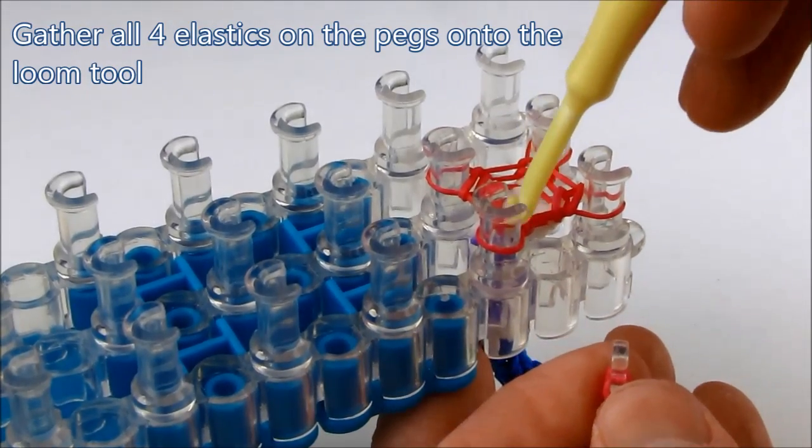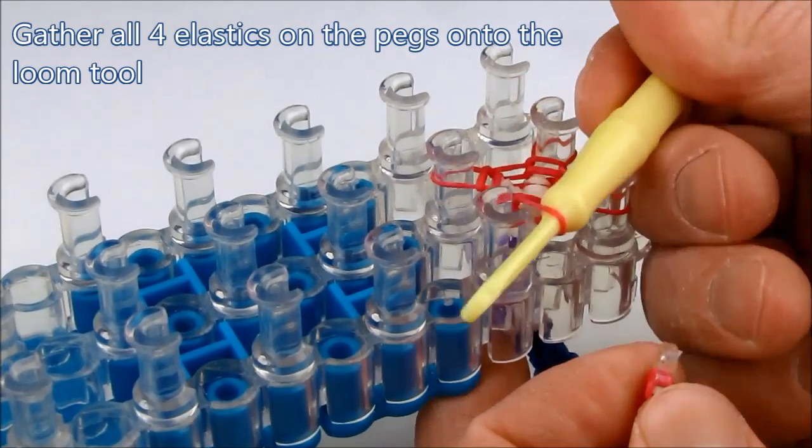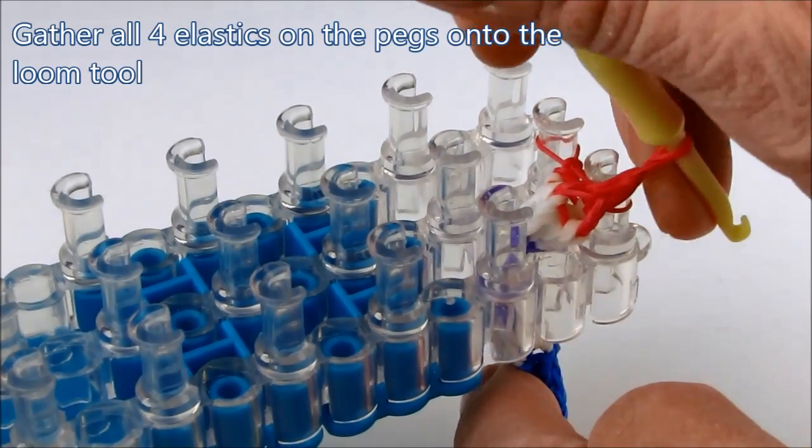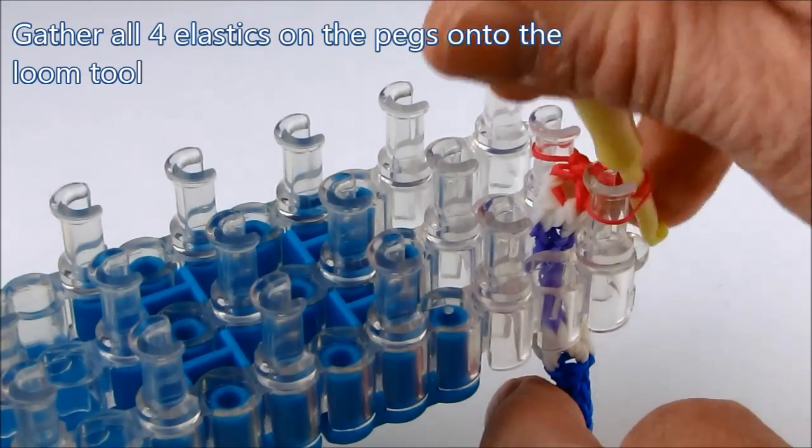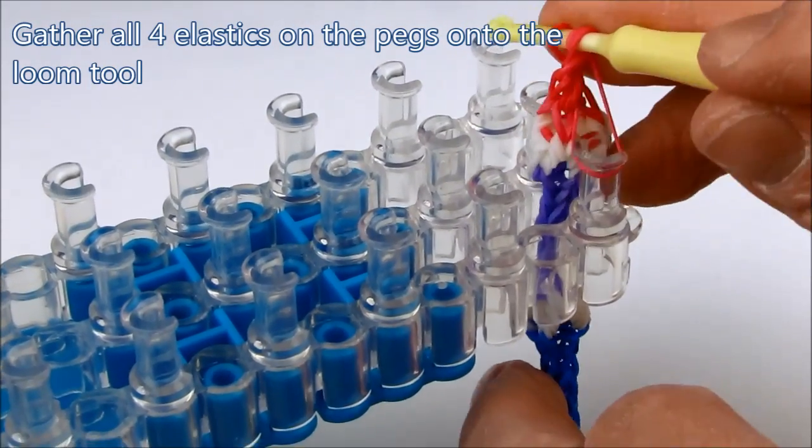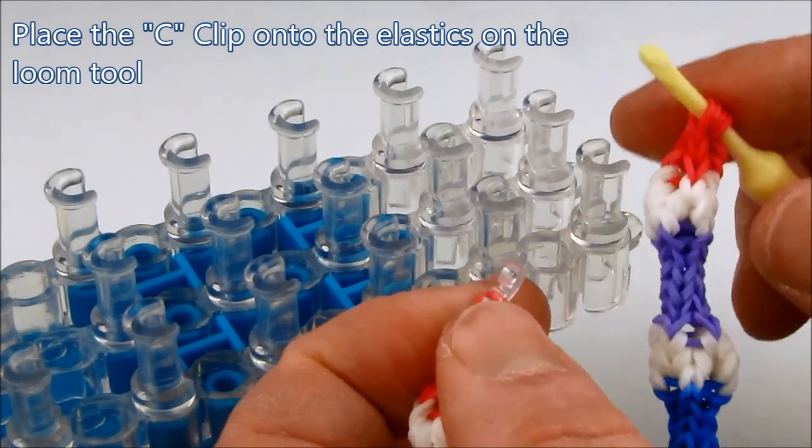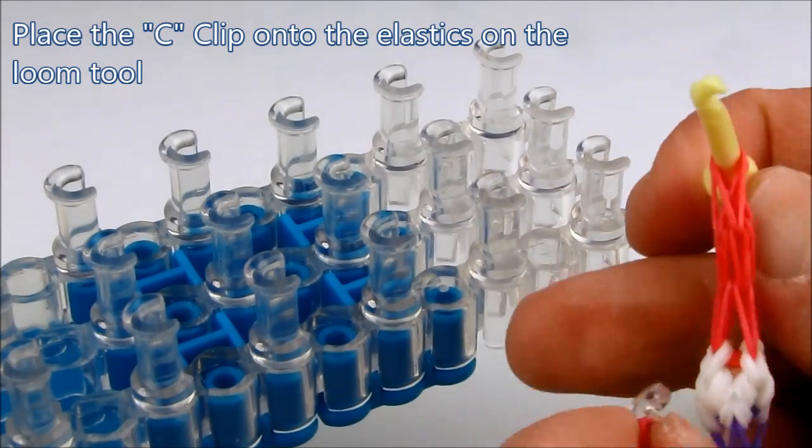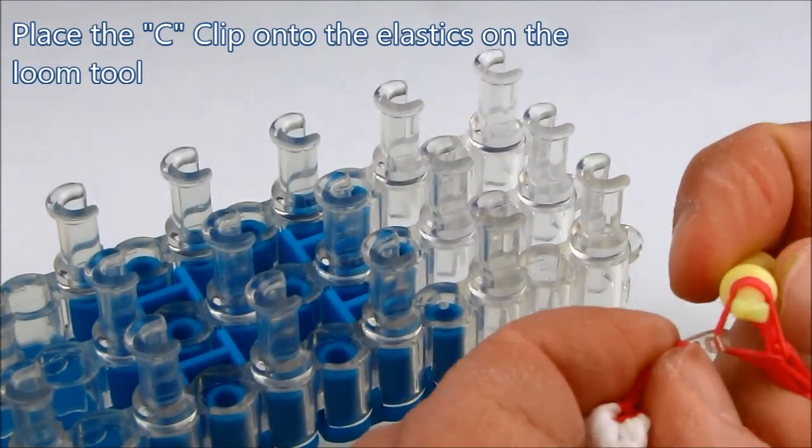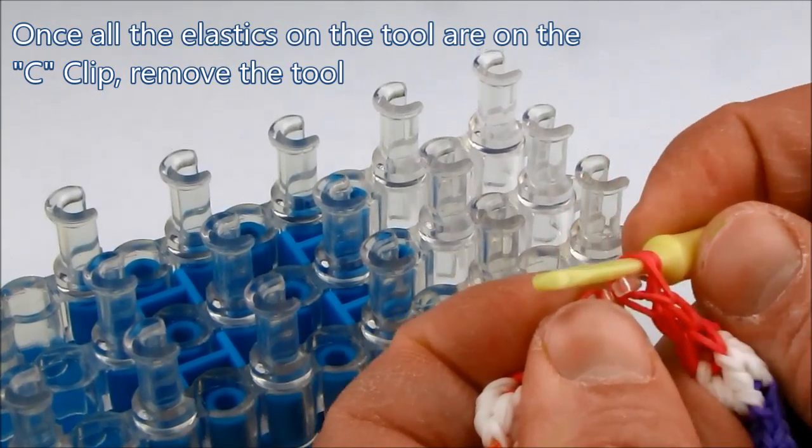So using your loom tool, gather all the elastics from the pegs. Feed your loom tool from the top to the bottom through the elastics, and gather them off of the pegs until you have all four elastics onto the loom tool. Now we want to place the elastics that are on the loom tool onto the C-clip. Once the C-clip is firmly attached on all elastics, we can safely remove the loom tool.